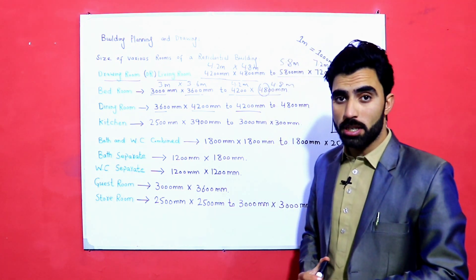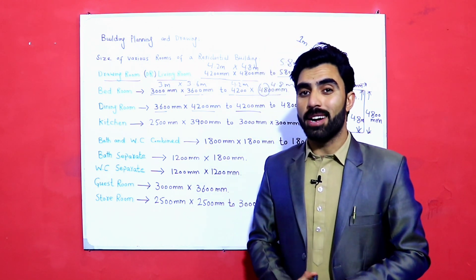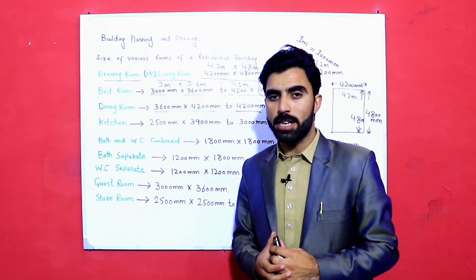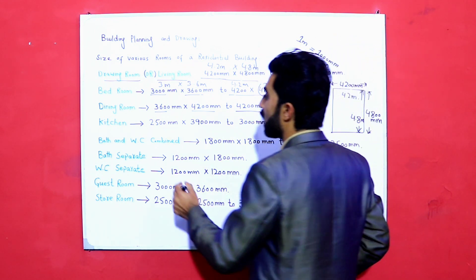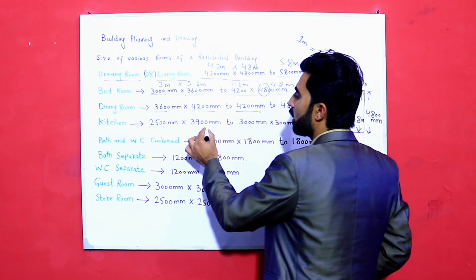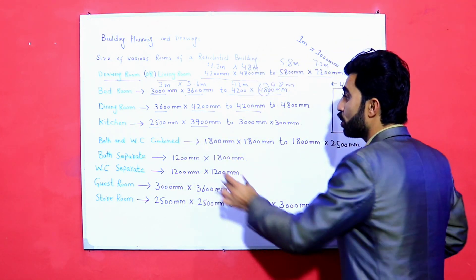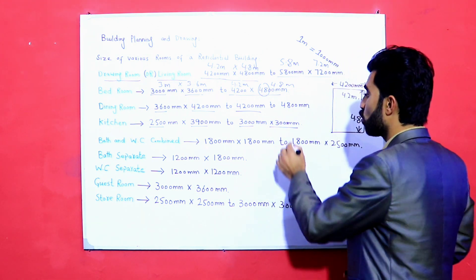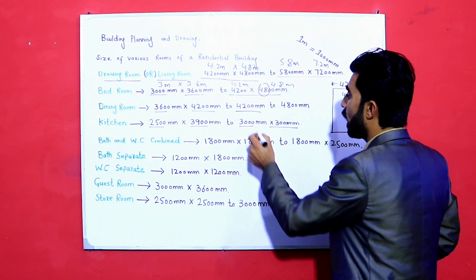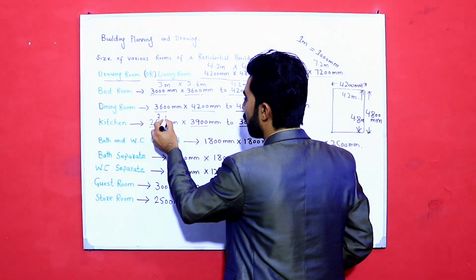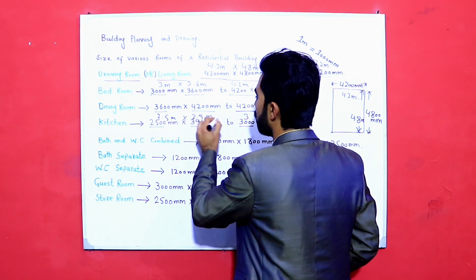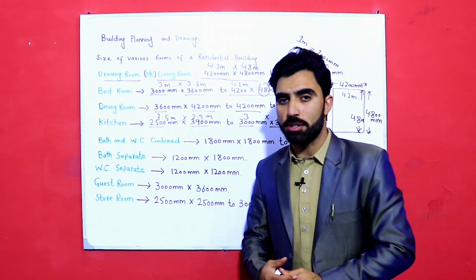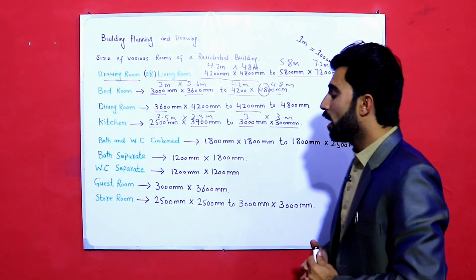The kitchen is very important in a building, and many people are confused about its size. The standard size of the kitchen is 2500 mm by 3900 mm — that is 2.5 meters by 3.9 meters. You can also take 3000 mm by 3000 mm, which is 3.0 m × 3.0 m. The width should be a minimum of 2.5 meters and the length at least 3.9 meters.